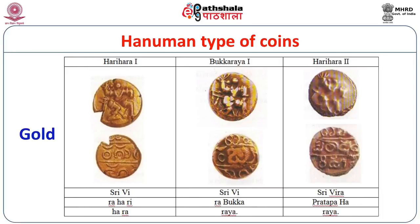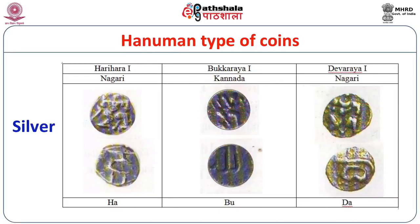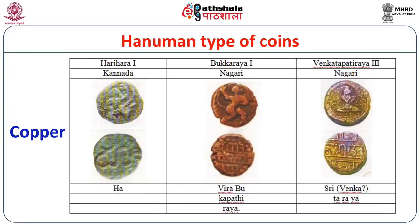On the Hanuman type gold coins issued by Harihara I, Bukkaraya I, and Harihara II, we find Hanuman standing on the obverse and the legend in Kannada and Nandhinagari script on the reverse. The Hanuman type silver coins were again issued by Harihara I, Bukkaraya I, and Devaraya I, with Nagari and Kannada script on the reverse. The copper coins were issued by Harihara I, Bukkaraya I, and Venkatipathiraya III. On the Venkatipathiraya III coin, Hanuman is depicted seated rather than standing.